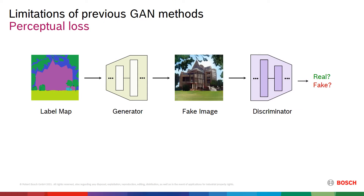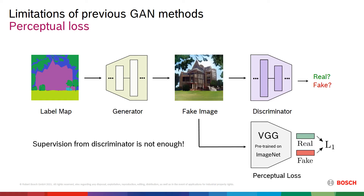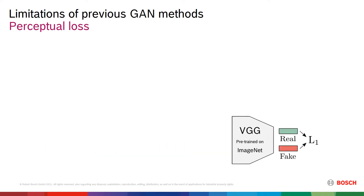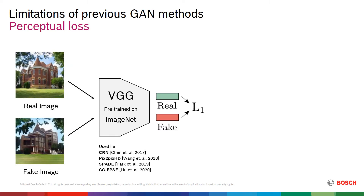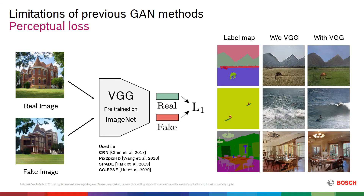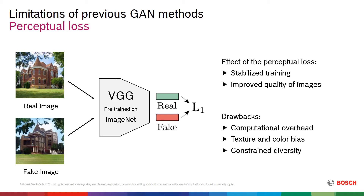So far, impressive results for this task have been achieved with generative adversarial networks. However, these models suffer from two major limitations, which we solve in our work. Firstly, it is difficult to train a generator only with the adversarial loss from a discriminator. To achieve satisfying quality, previous methods additionally employ a perceptual loss. This loss extracts deep features from real and fake images with a pre-trained classification network. The distance between these features is minimized to bring fake images closer to the real data. A common choice is the VGG network pre-trained on ImageNet. The VGG loss helps to stabilize the training and strongly improves image quality of previous methods. Despite the benefits, the VGG loss comes with a computational overhead introduced by an extra network. Moreover, in our experiments we show that it biases the color and texture distributions of images and greatly reduces diversity.